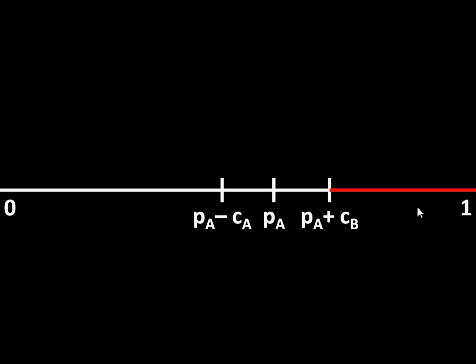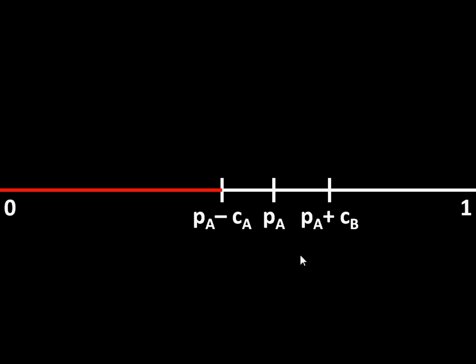For the same reason, you would prefer fighting over letting me have the entire island. If I controlled the entire island, you would want to fight because your value for fighting is P_A minus C_A, which is a positive amount — the size of that red line is more than nothing. So as a result, we can't come up with an effective agreement that satisfies both of us. Either you demand control of the entire island and I want to fight you over it, or I demand control and you want to fight me over it. We can't actually come up with an agreement because we can't divide the island effectively.